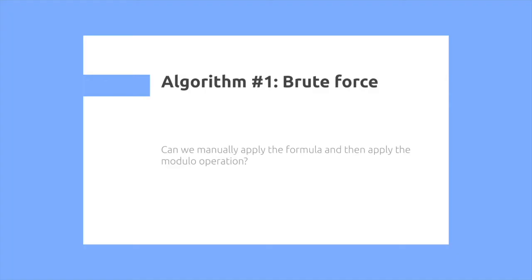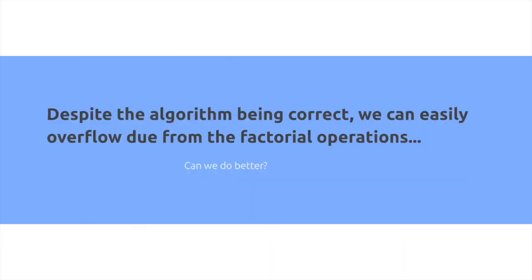The very first algorithm we can try is simply brute force. We manually apply the formula and then apply the modular operation. However, we note that 40 factorial is a gigantic number, and unfortunately this may not fit in memory, so can we do better? Despite the algorithm being correct, we can easily overflow due to factorial operations.